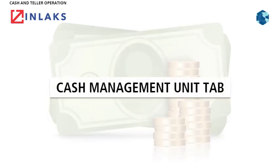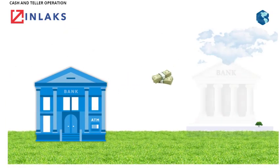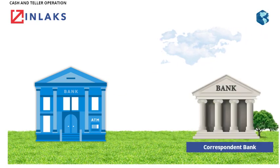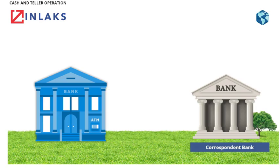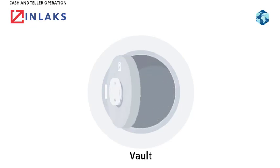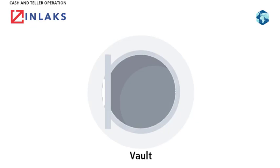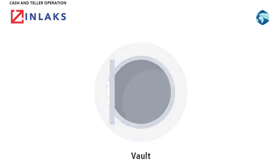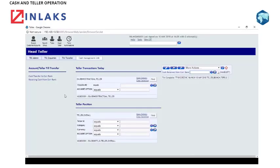Cash Management Unit Tab. This tab is used to move funds from the branch to and from Correspondent Bank. The vault account is defaulted and the account to be credited or debited is inputted, including the bank's reference if available, at the Cash Transfer to field. Commit the deal.